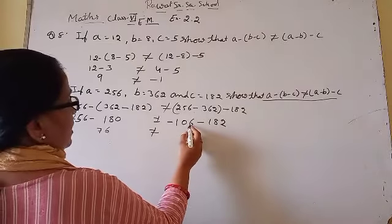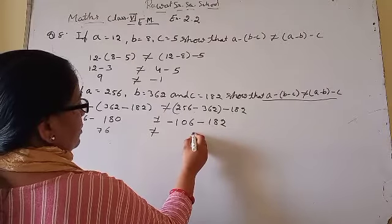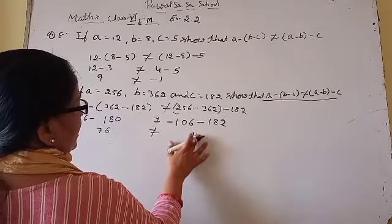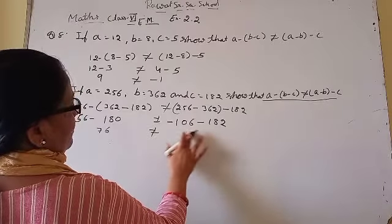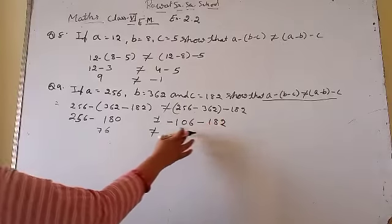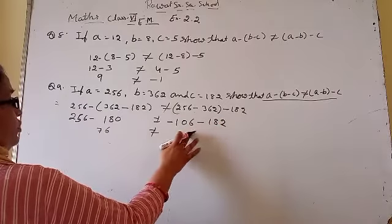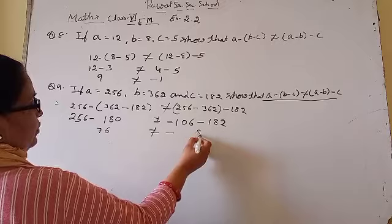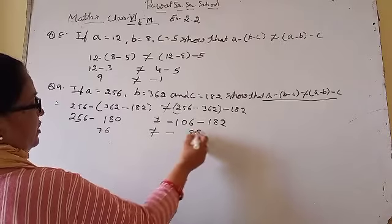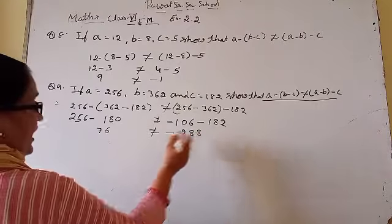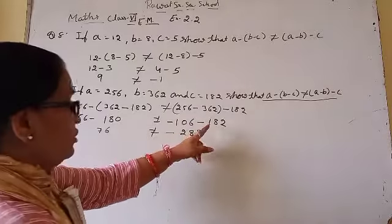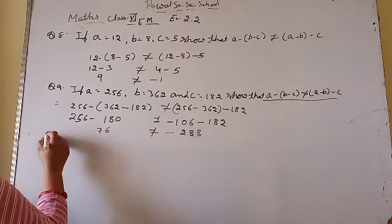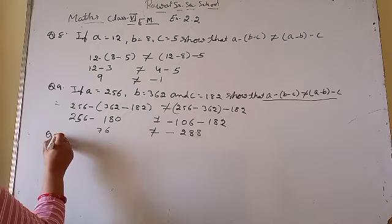RHS में: minus 106 और minus 182 दोनों minus के हैं, तो एड करते हैं — 6 में से 4: 4, 0 और 8: यहाँ बड़ा number 182 है — दोनों को जोड़ देते हैं, sign वही रहेगा क्योंकि दोनों minus के हैं। LHS = 76, RHS ≠ 76, तो दोनों equal नहीं। यह हो गया question number 9।